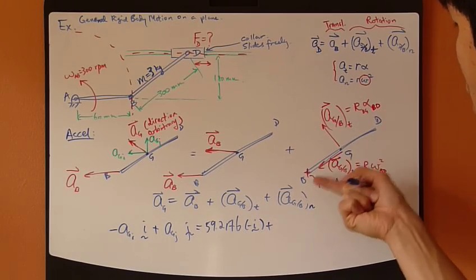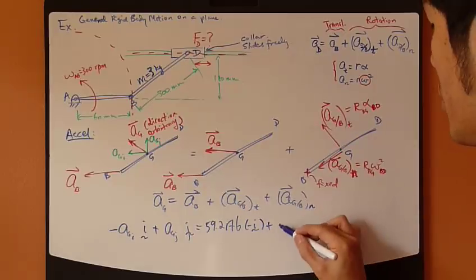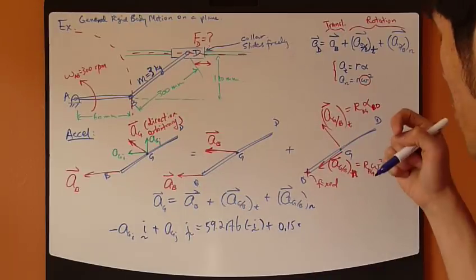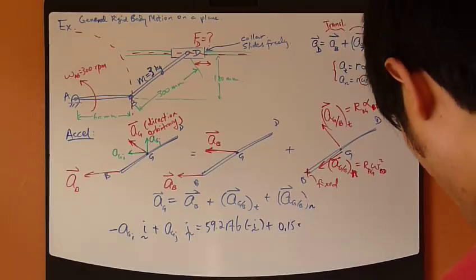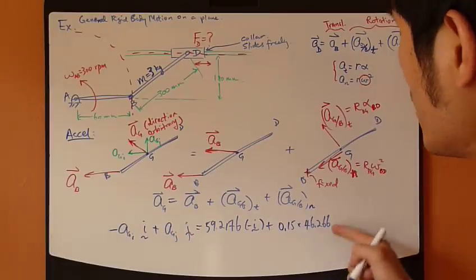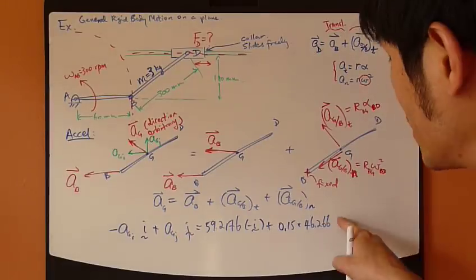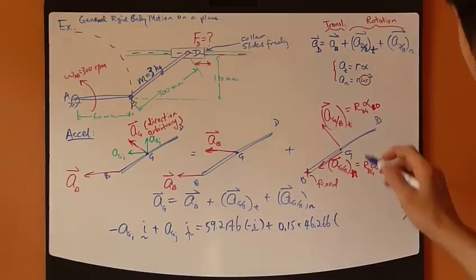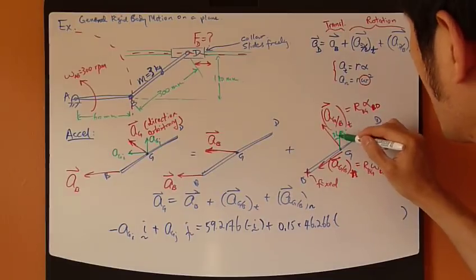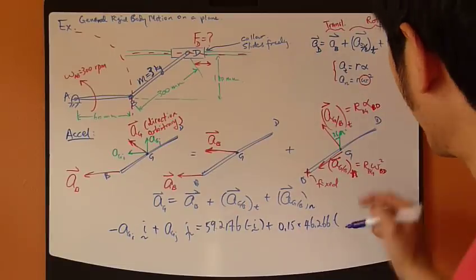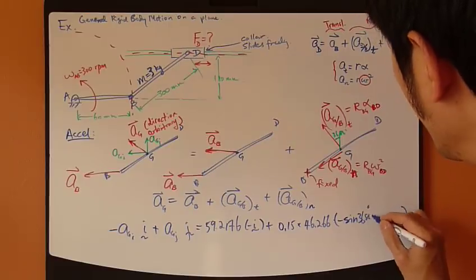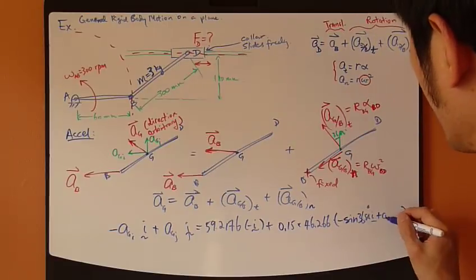in this case, is the distance between B and G, which is half of the distance of B, D, which is 0.15 meters, times alpha B_D, which I had found earlier. And that is 46.266. That's R alpha. Now, we need to include the direction. The direction of this guy, once again, this angle is 36.86 degrees. So the I component is to the left, so negative of sine 36.86, I, and then J, cosine,